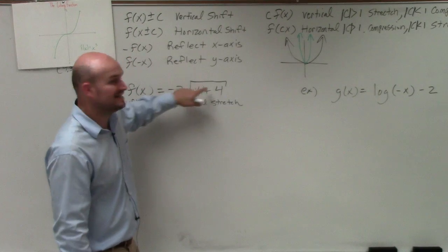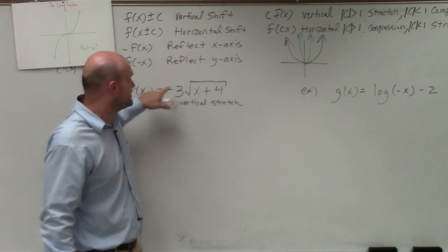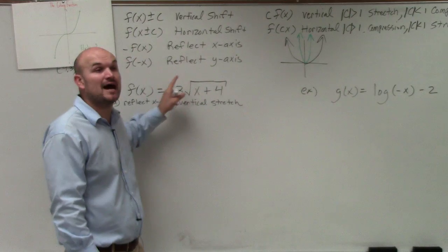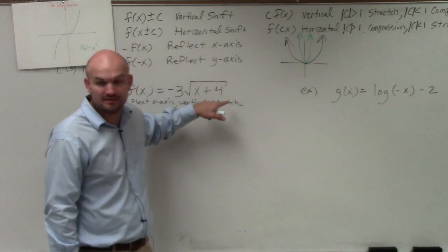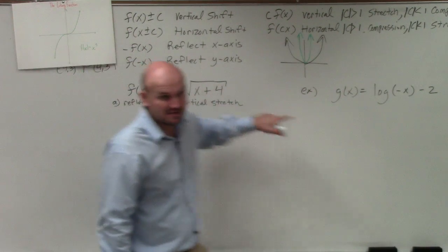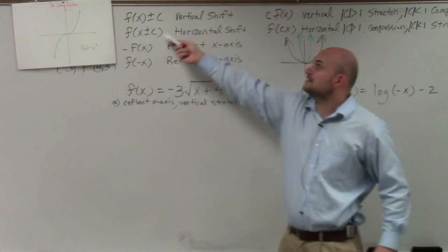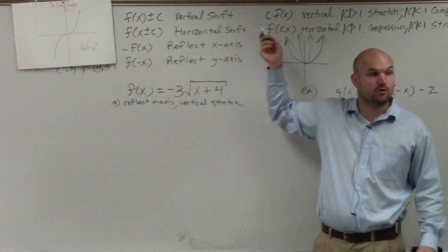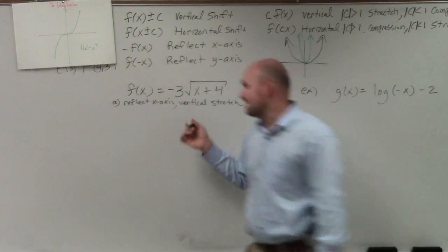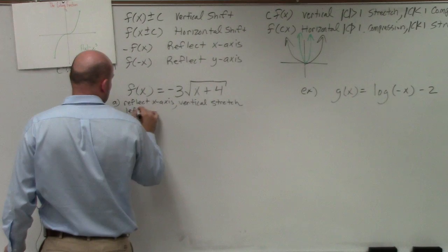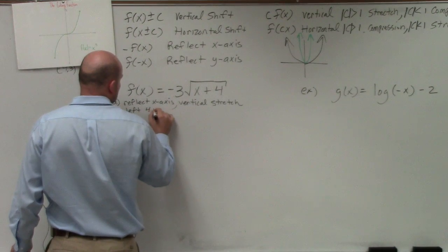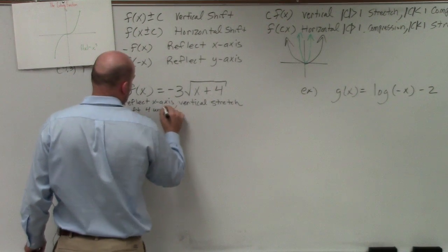Now you can see, to get to this next transformation, I have to go under the radical, meaning I'm now going inside the function. Does everybody see that? So if I'm going inside the function and I'm adding a number, that means it's a horizontal shift. And it's a horizontal shift to the left. So I'm going left 4 units.